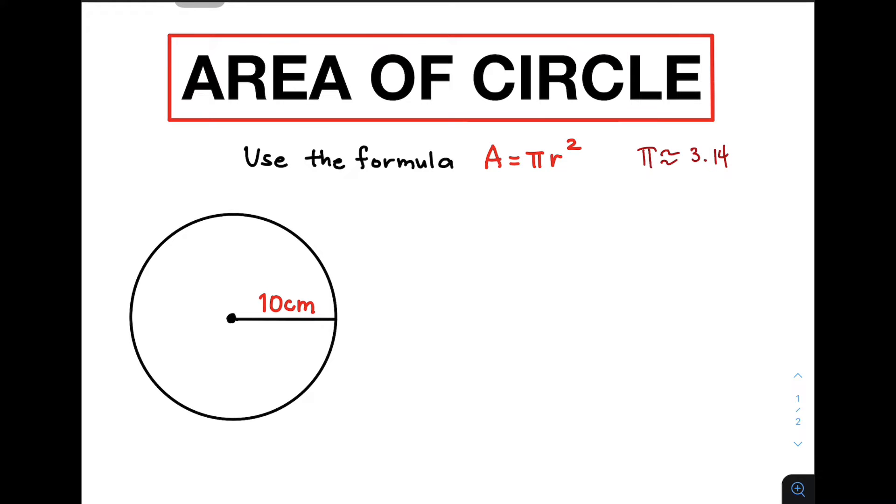The first one is the diameter. The diameter is a segment which connects two points from one part of a circle to the other part of a circle, and it goes through the center.